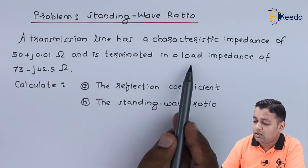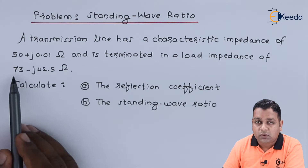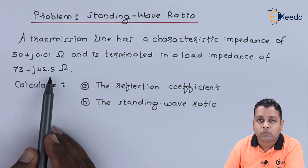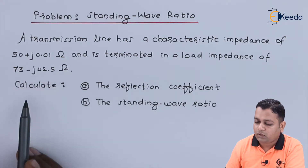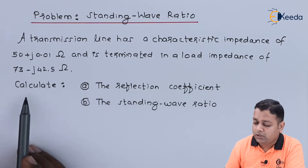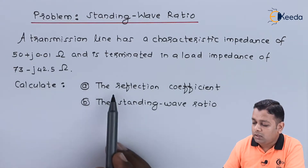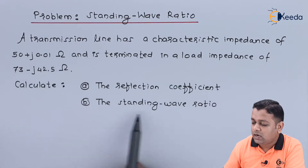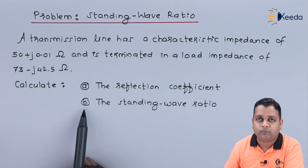The problem statement is: a transmission line has a characteristic impedance of 50 plus j times 0.01 ohms, and it is terminated in a load impedance of 73 minus j times 42.5 ohms. We are asked to determine the value of the reflection coefficient in part a, and the standing wave ratio in part b.